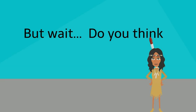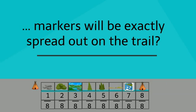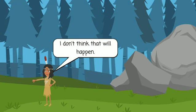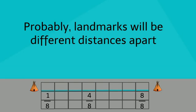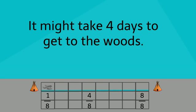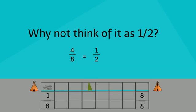But wait, do you think markers will be exactly spread out on the trail? I don't think that will happen. Probably landmarks will be different distances apart. It might take four days to get to the woods. Why not think of it as one-half? Four out of eight days equals one-half.